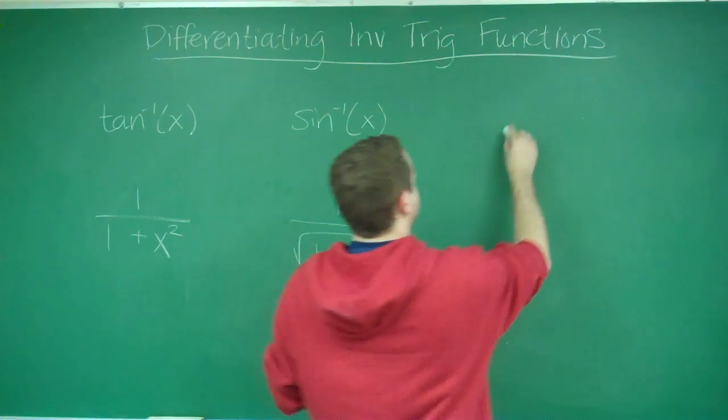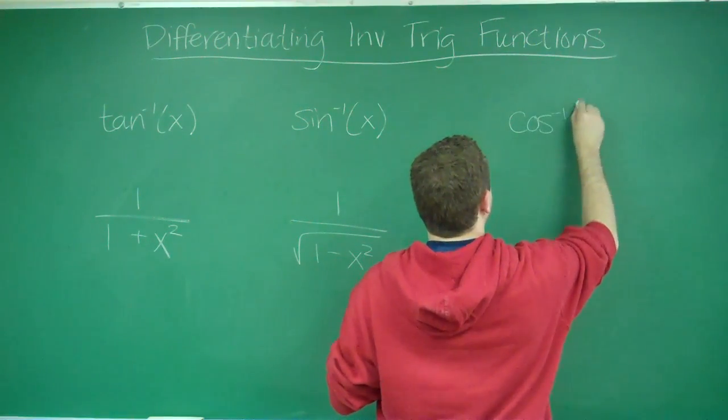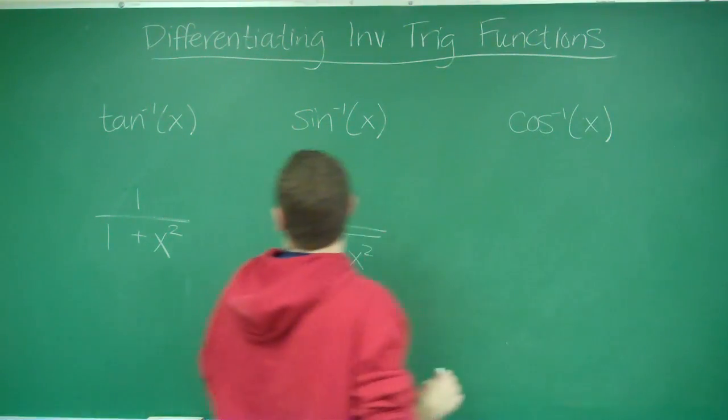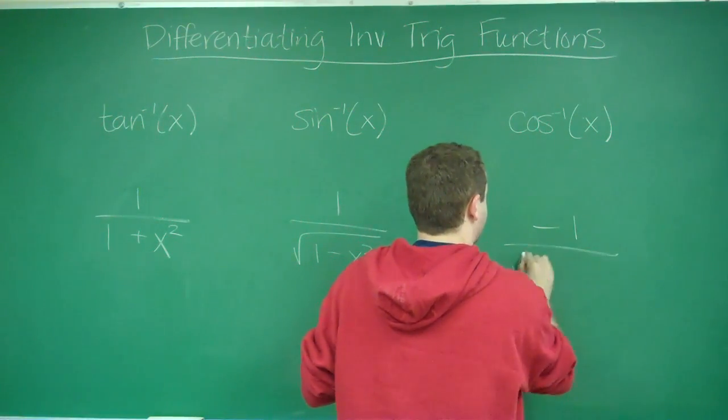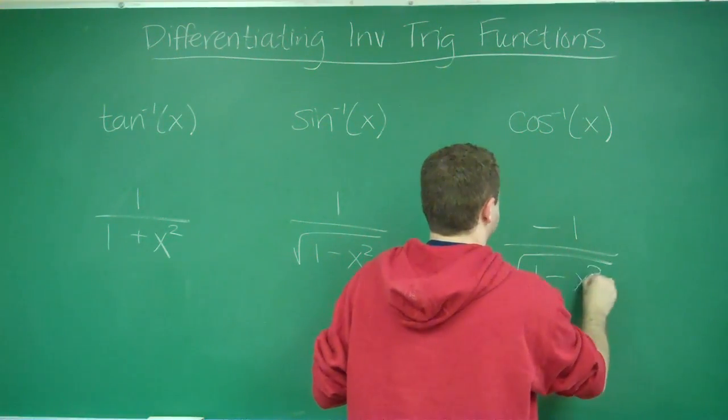Just the opposite of your arc sine of x. Your derivative there is going to be negative 1 over 1 minus x squared.